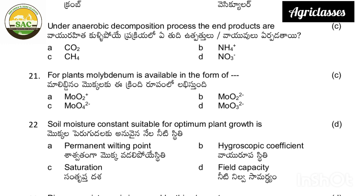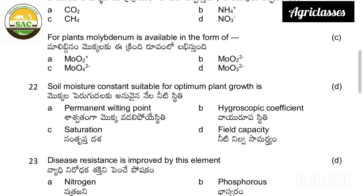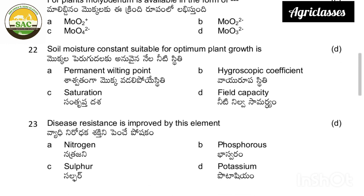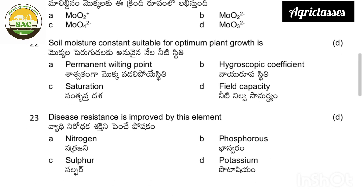Molybdenum is available to plants in which form: MoO2+, MoO2-, MoO4 2-, or MoO3? The correct answer is MoO4 2-. The soil moisture constant suitable for optimum plant growth: permanent wilting point, hygroscopic coefficient, saturation, or field capacity. The correct answer is field capacity.